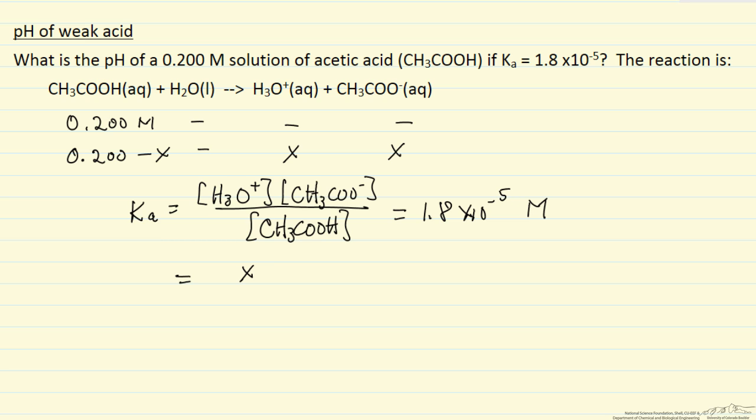This then becomes x squared over 0.20 minus x, and we'll make the normal assumption that x is small relative to 0.2. So this means x squared is 0.2 times 1.8 times 10 to minus 5, which is 3.6 times 10 to the minus 6.